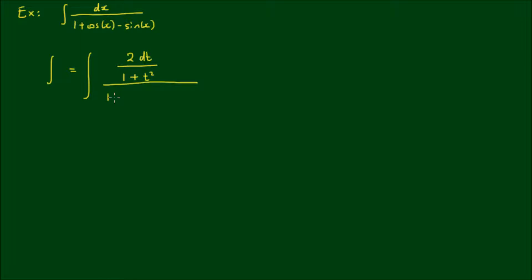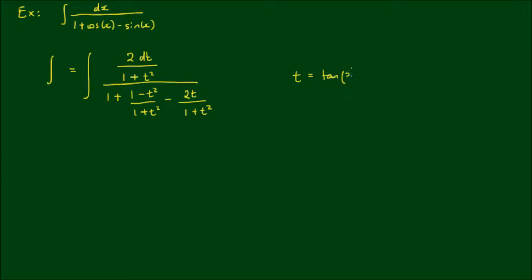The 1 in the denominator remains as is. Cos(x) is replaced by (1 - t²) / (1 + t²), minus sin(x) which equals 2t / (1 + t²). And remember that t = tan(x/2). So let's simplify this integral.